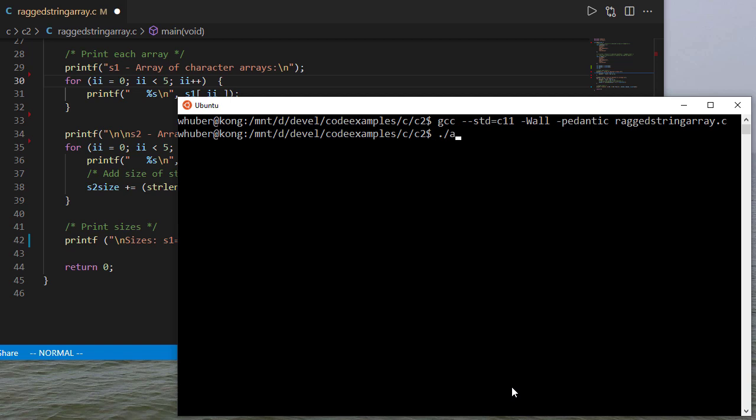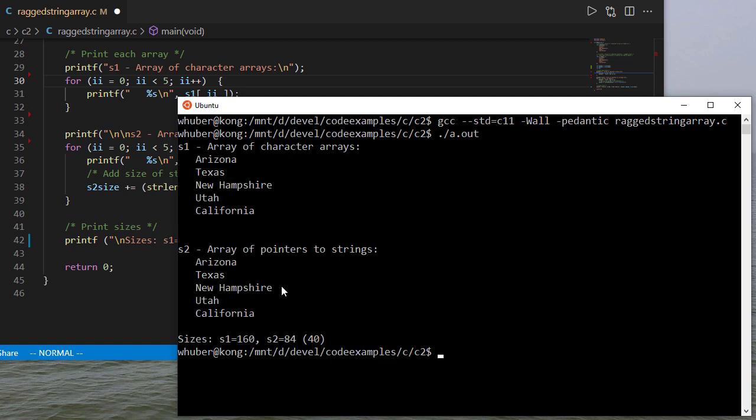And when we run this, you can see that the identical contents of the two arrays gets printed out. But the size of S1 is 160 bytes, which is 5 times 32. The size of the array of pointers is 84, 40 bytes of which is the actual pointers themselves. So you can see we have a significant size savings with the array of pointers. And that would be the ragged array or the jagged array, depending on what you prefer to call it.